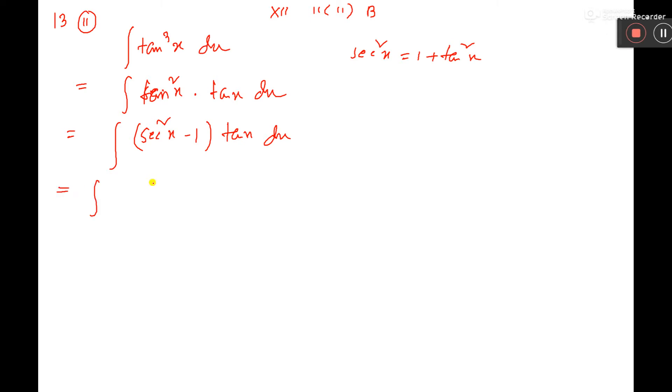Now you multiply tan x inside, tan x into sec square x dx, minus tan x dx.